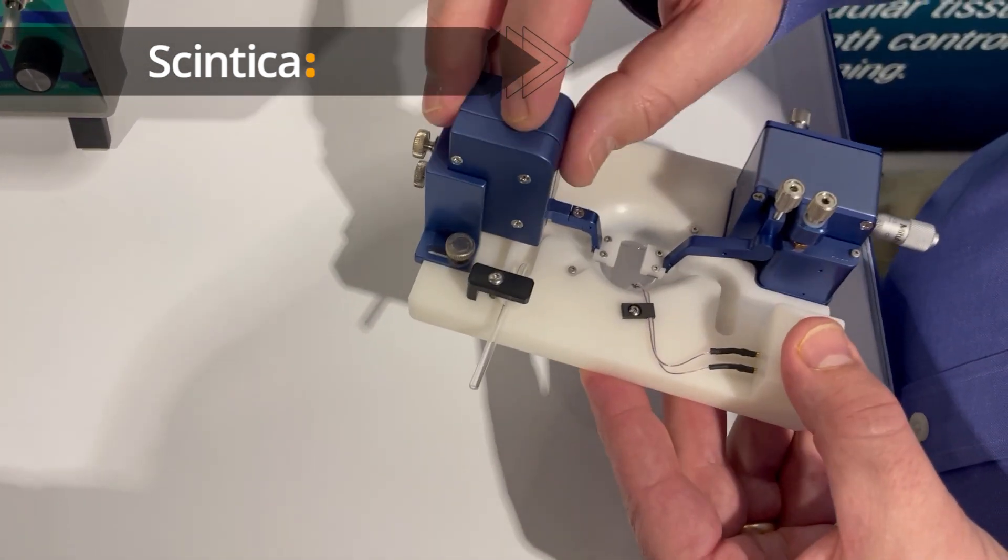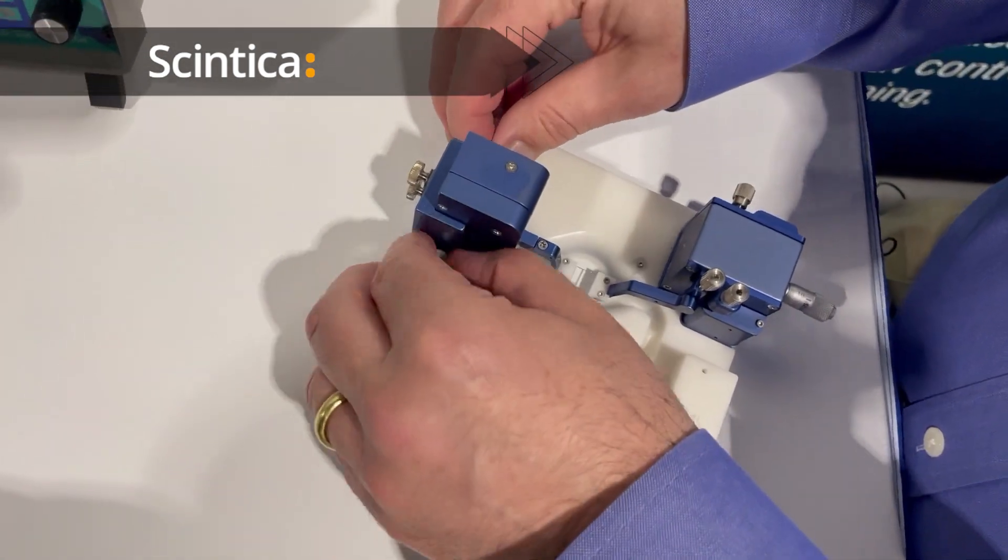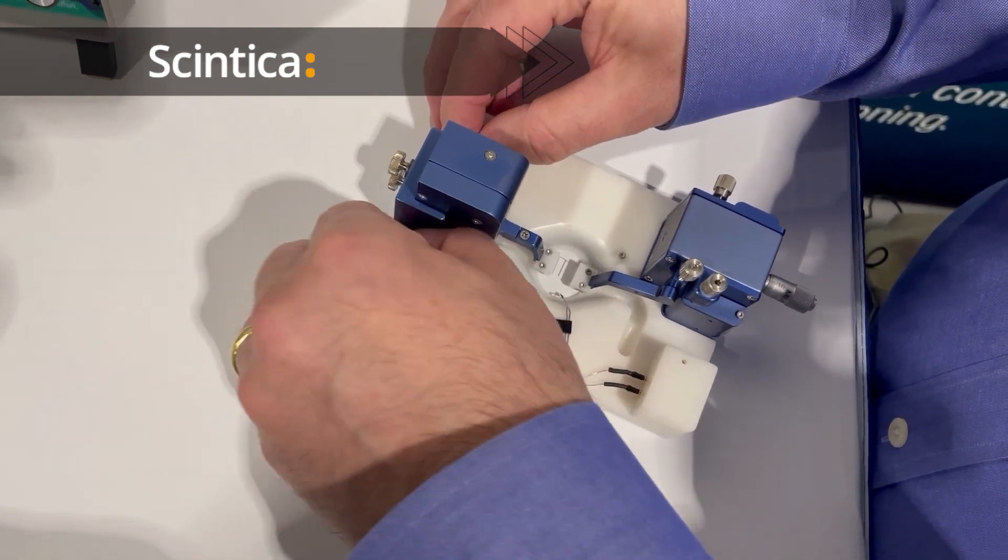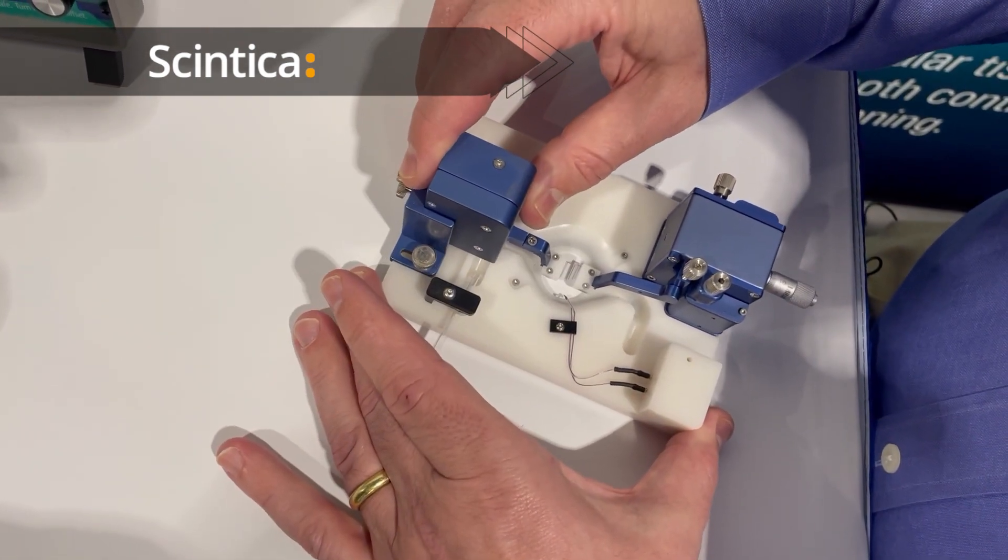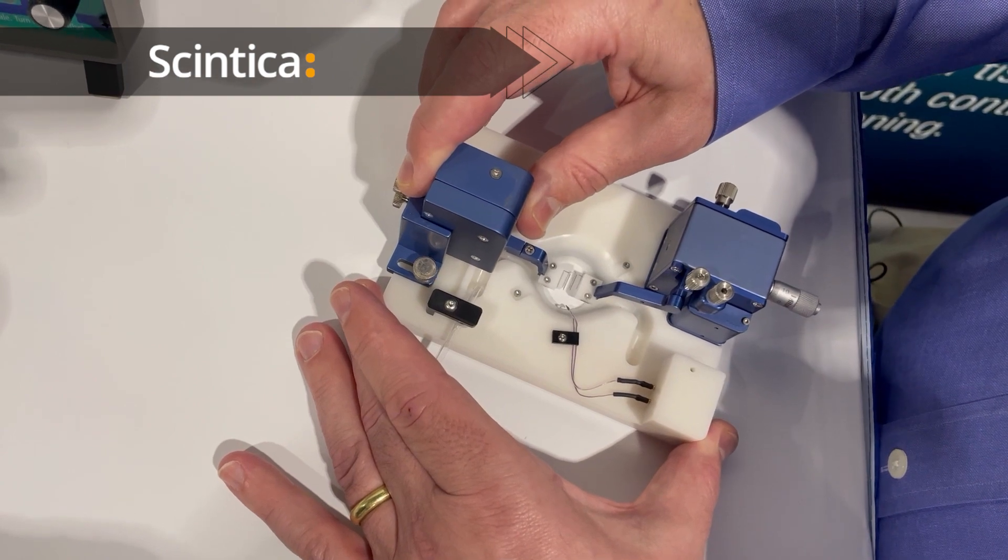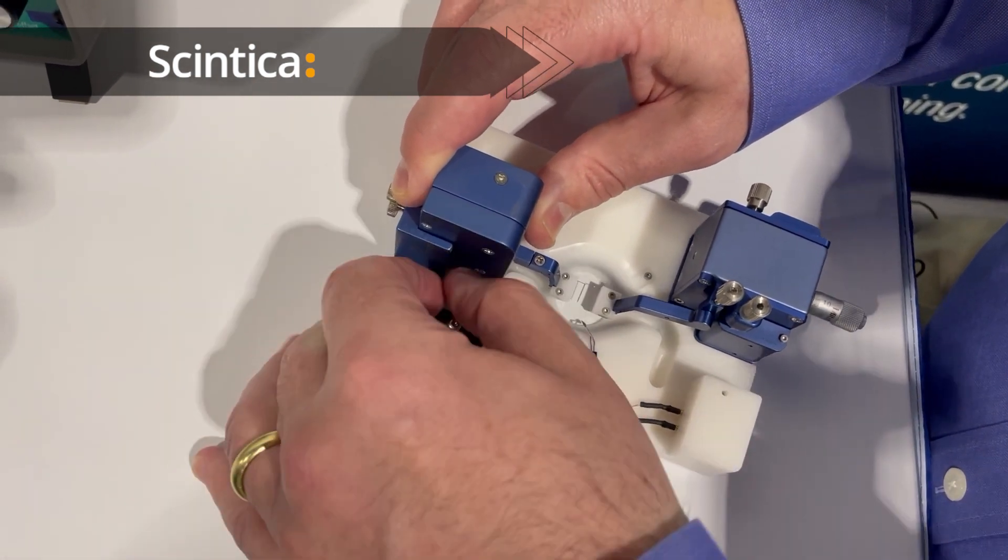The force transducer sits in this housing here and can be moved back and forth depending on the size of the specimen that's being studied. So you get some adjustment there.